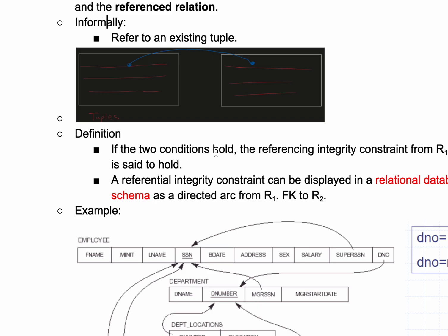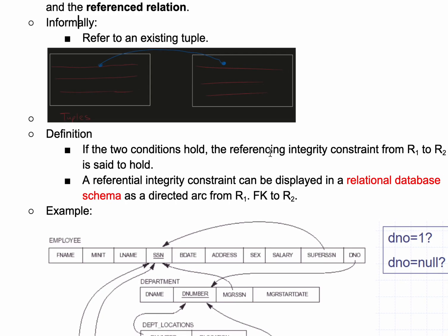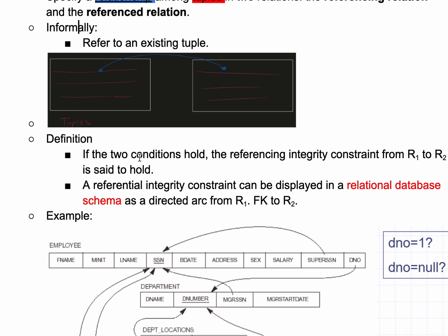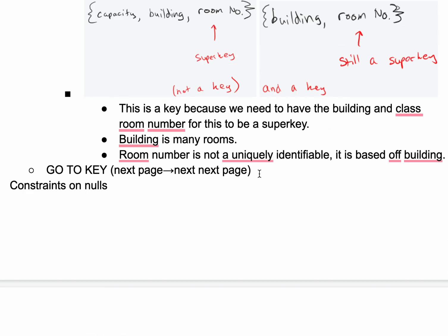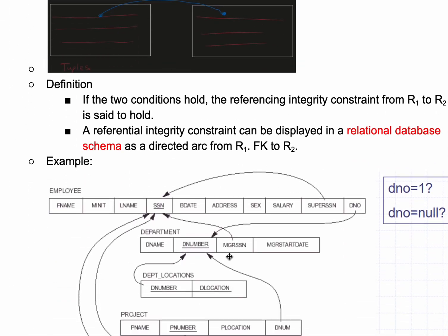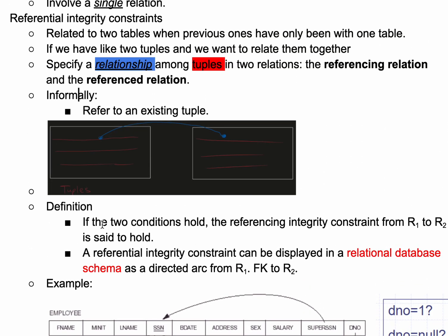If two conditions hold, the referencing integrity constraint from R1 to R2 is said to hold. Remember the integrity constraint we talked about previously, entity integrity constraint - no primary key can be null. That is going to follow suit here.